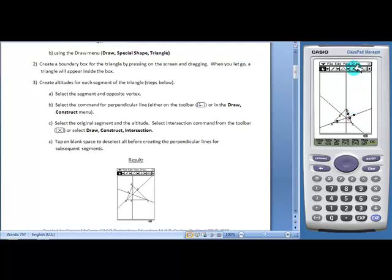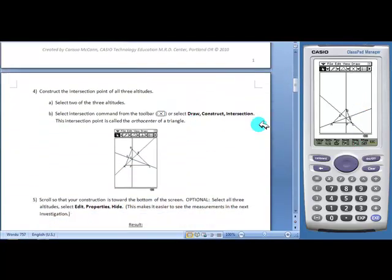And they will do this for all three. Finally, students will construct the intersection point of the altitudes. Select two out of the three altitudes and use the same intersection command.